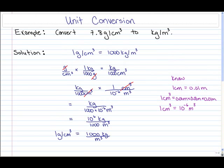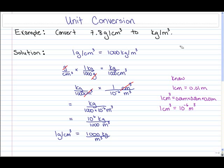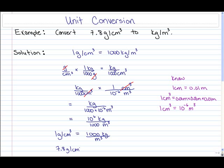Now if we want to convert 7.8 grams per cubic centimeter to kilograms per cubic meter, this is easy because we know the conversion. All we have to do is take 7.8 grams per cubic centimeter and multiply it by 1,000. So 7.8 grams per cubic centimeter equals 7,800 kilograms per cubic meter.